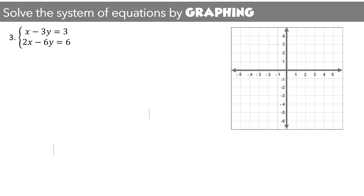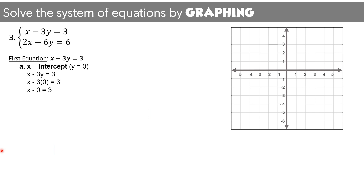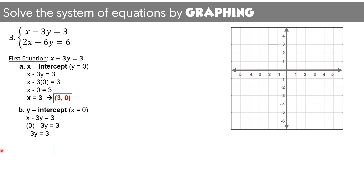For the third example, we solve by graphing starting with the first equation, x minus 3y equals 3. Changing y to 0, we get x equals positive 3, so the ordered pair is (3, 0). For the y-intercept, making x equal to 0 gives negative 3y equals 3. Dividing both sides by negative 3 gives y equals negative 1, so the ordered pair is (0, −1).